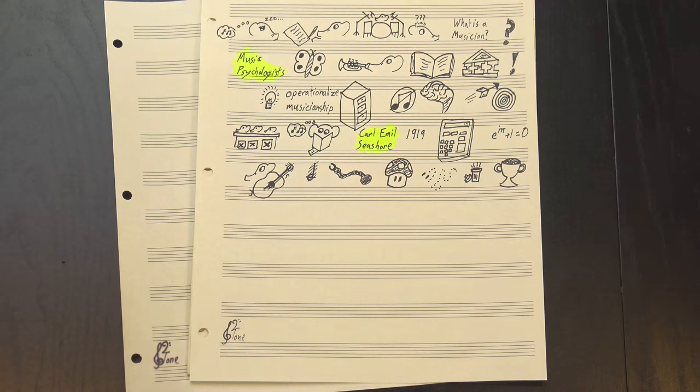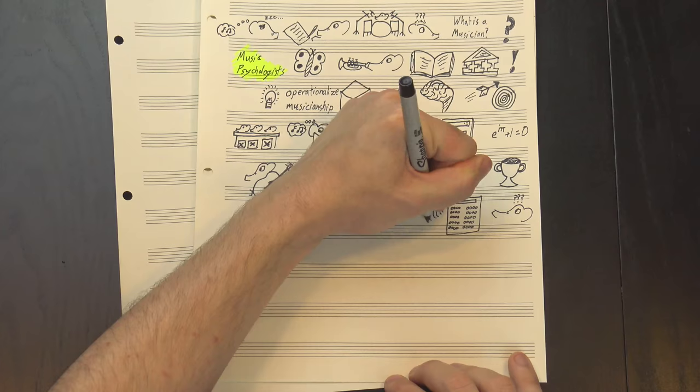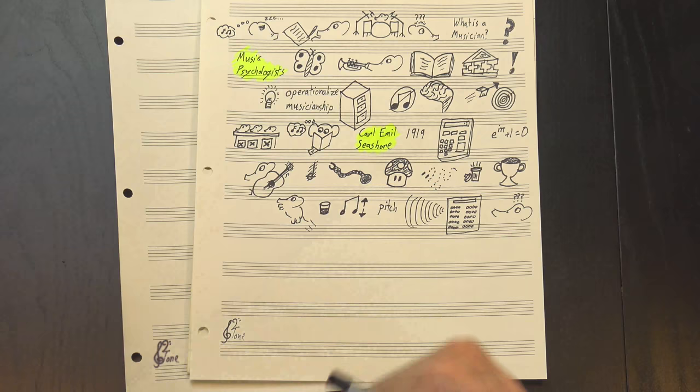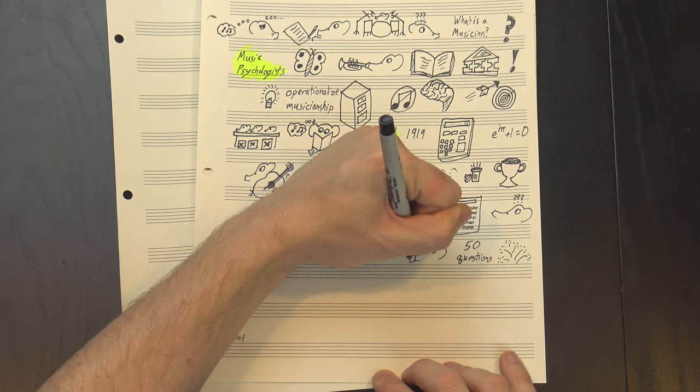So how did it work? Well, at its heart was a battery of five multiple-choice tests, each focused on a different bit of musical perception. The first test focused on pitch. You'd hear two notes, and you'd be asked whether the second note was higher or lower than the first. Here, give it a shot. Did you guess that it was higher? Well, congratulations, you're officially a musician. Okay, this section actually had like 50 questions and the notes got a whole lot closer, but still, you're probably a musician anyway.